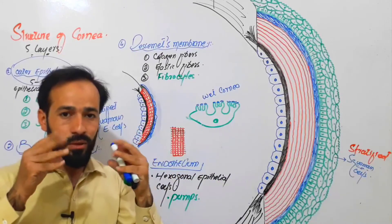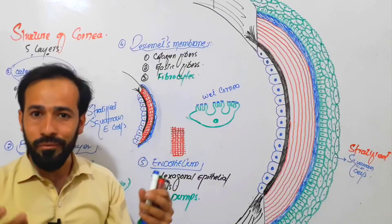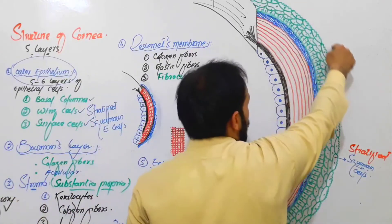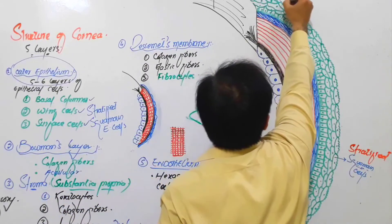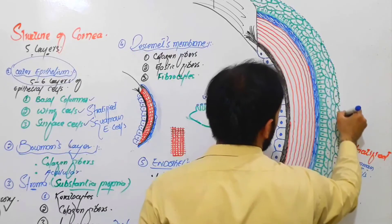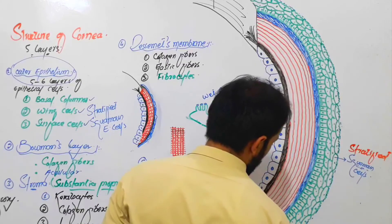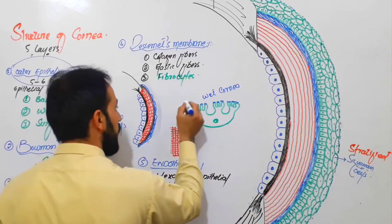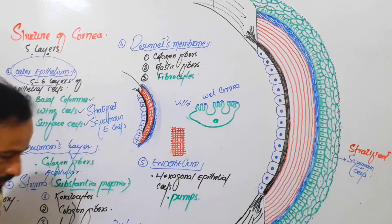When we blink our eyes, we do not feel any difficulties because the outer surface of the cornea contains water particles — the fluid particles. The outer squamous cells hold these fluid particles using their villi.